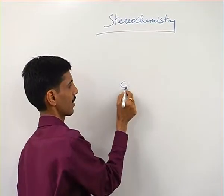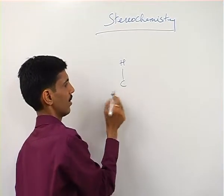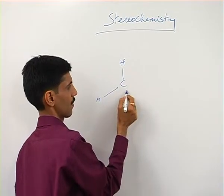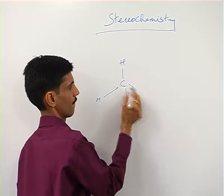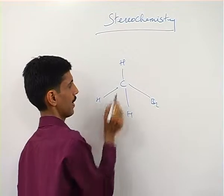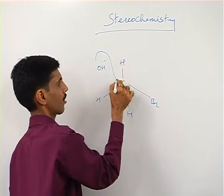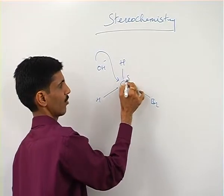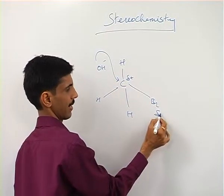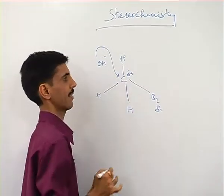In this case, as I have given you before as well, you have got CH3Br. When you have OH-, the attack of OH- takes place on the positively charged carbon atom from the backside.